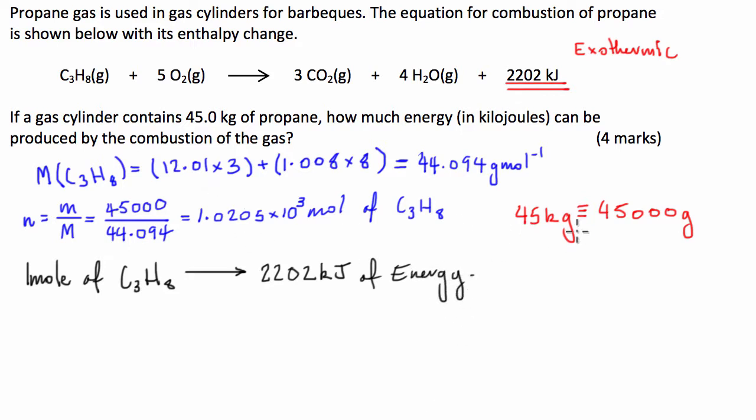So then what we can say is, therefore, 1.0205 times 10 to the 3 moles of C3H8 is going to produce 1.0205 times 10 to the 3 times 2202 kilojoules.